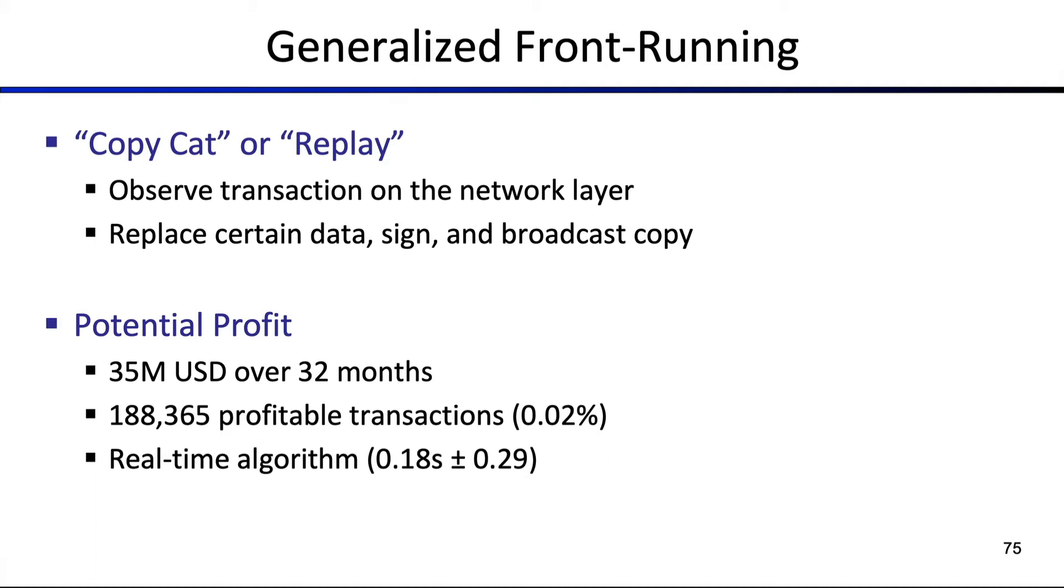The potential profit we identified is about 35 million US dollars over a 32 month period. Naturally, what we have ignored here is the possibility that others will front run you, front run your copycat, or defend against being front run. We have gathered about 188,000 profitable transactions over these 32 months of historical blockchain data, and this represents about 0.02% of the entirety of Ethereum blockchain transactions.